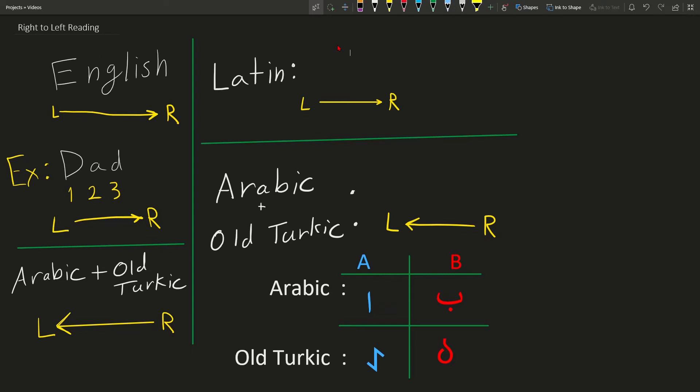Hi, everybody. Today, I would like to talk about the principle of right-to-left reading. Now, in English, we read from left to right. And we can see this exemplified in the word dad, where we have the letter sequence as one, two, three. Again, this is left-to-right reading.